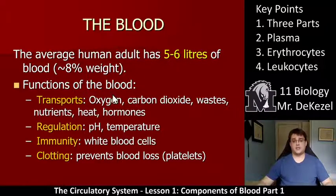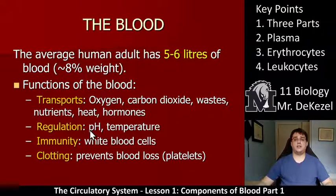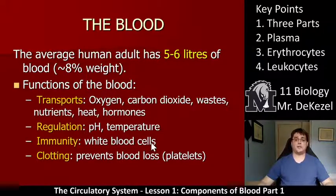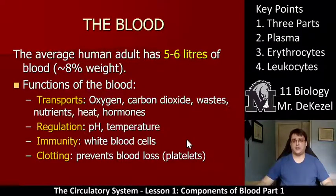The functions of the blood, as we discussed, include transporting oxygen, CO2, waste, nutrients, heat, and hormones. It's involved in pH and temperature regulation. It has white blood cells, which we're going to talk about in this lesson, which defend against any foreign invaders. And it also has clotting agents — in particular platelets, along with other things — which prevent blood loss.